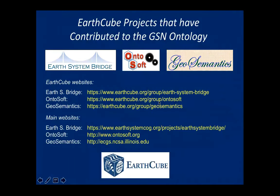A lot of this talk will be about something I've developed over the last few years, triggered by the CSDMS work — what's called the Geoscience Standard Names ontology. GSN is Geoscience Standard Names. This is work that was born — I never thought I was going to be the creator of an ontology when I started down this path, but Wanda had to convince me that I needed an ontology in the first place.